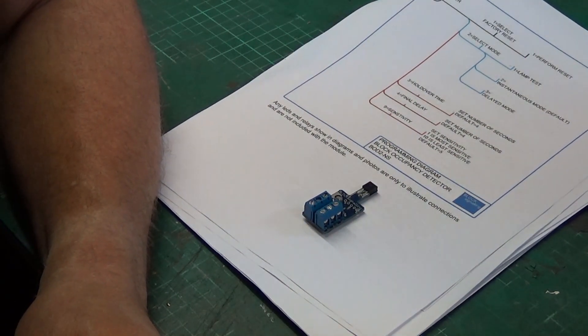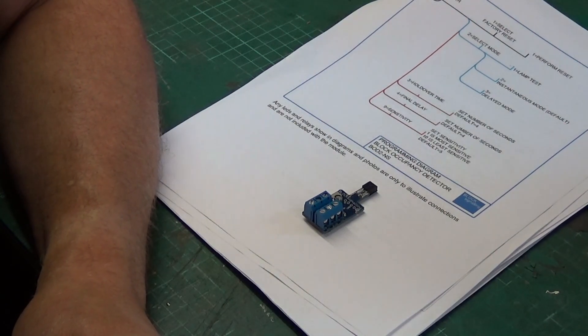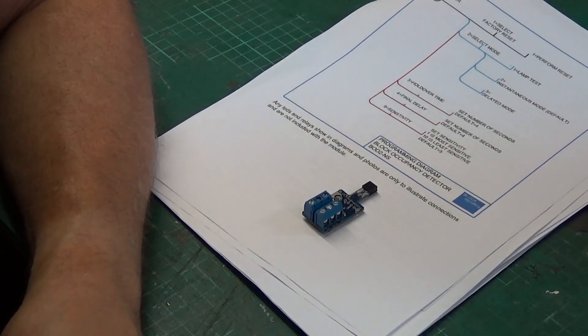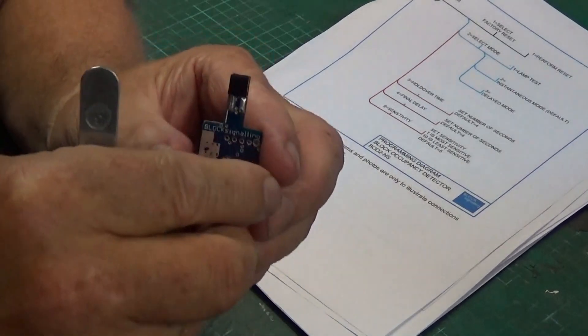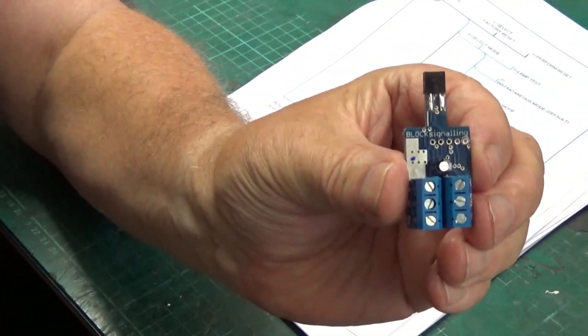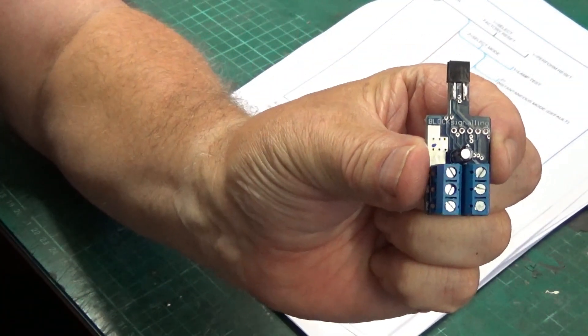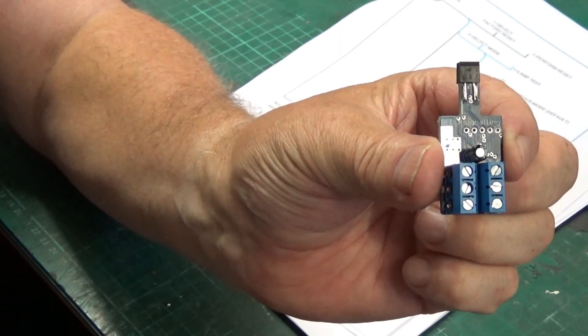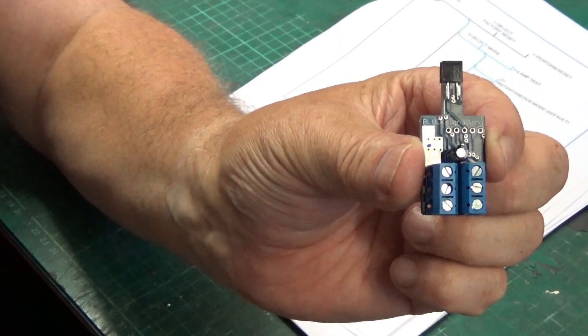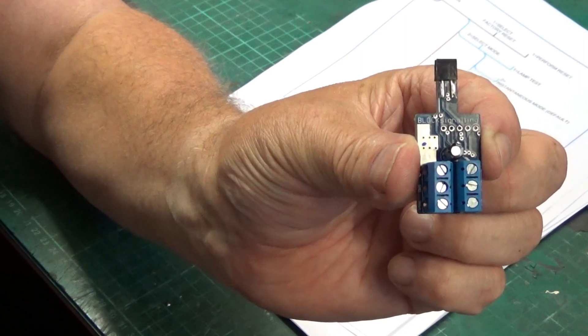I went pretty much for basic train detection. All I really wanted was just a simple red LED or green LED showing whether a track was occupied or unoccupied. I went for the Block Signal, and this is the BOD2NS infrared train detector module, very straightforward to use and wire up.